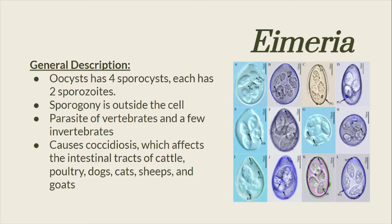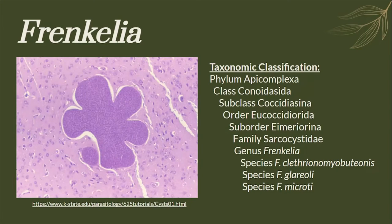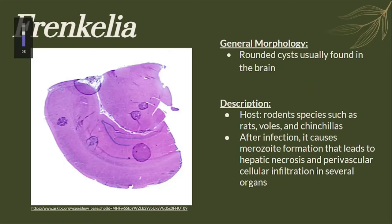Here is the taxonomic classification for the genus Frankelia. The genus Frankelia has rounded cysts usually found in the brain of the host, known to be a rodent species. After infection, it causes merozoite formation that leads to hepatic necrosis and perivascular cellular infiltration in several organs.